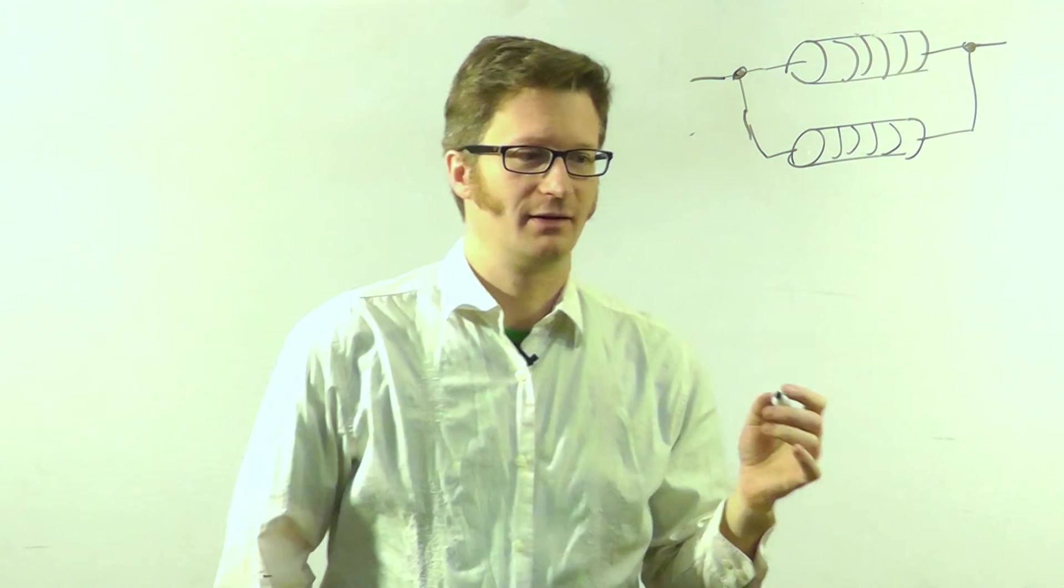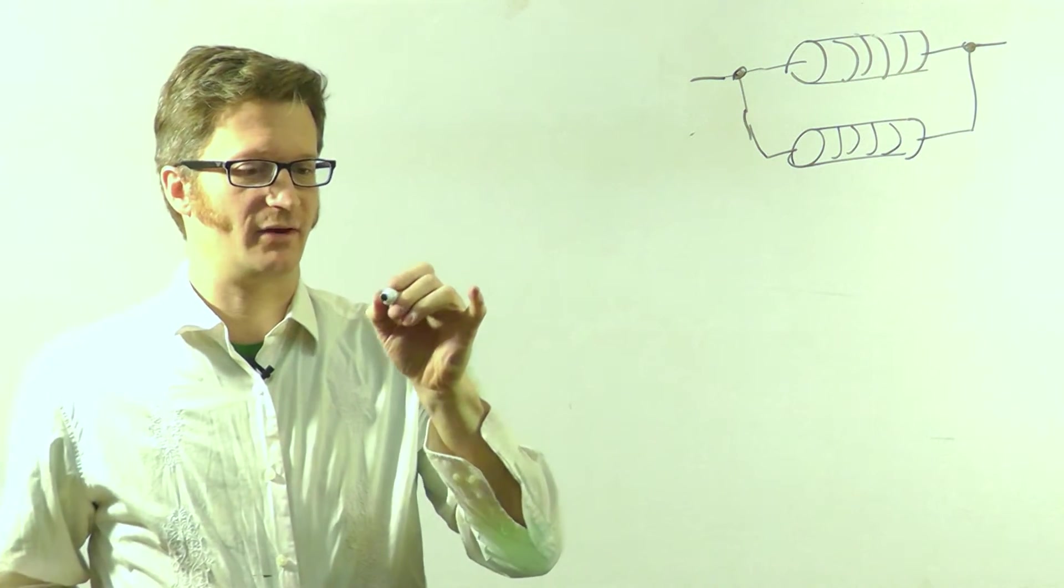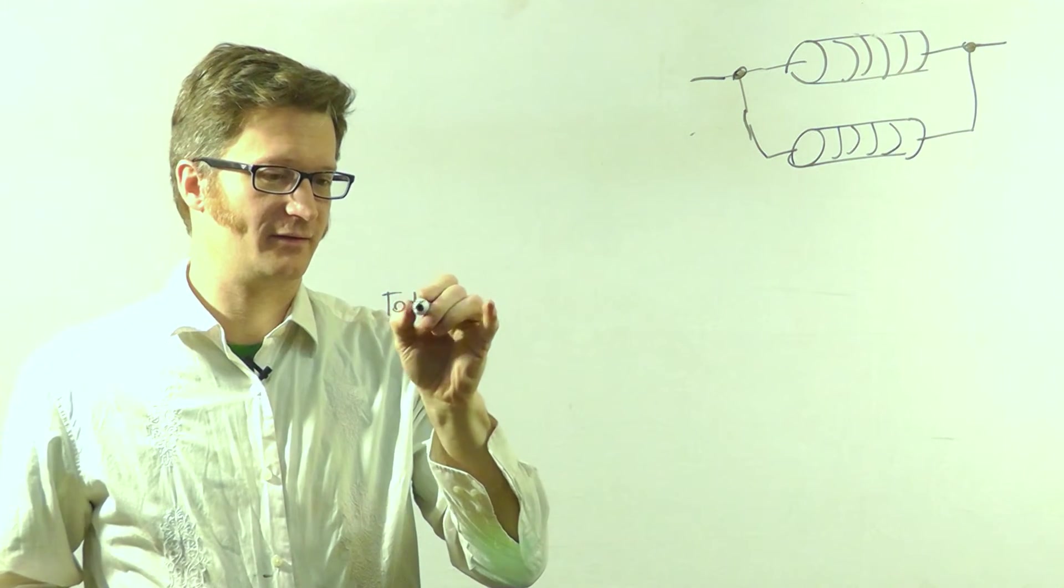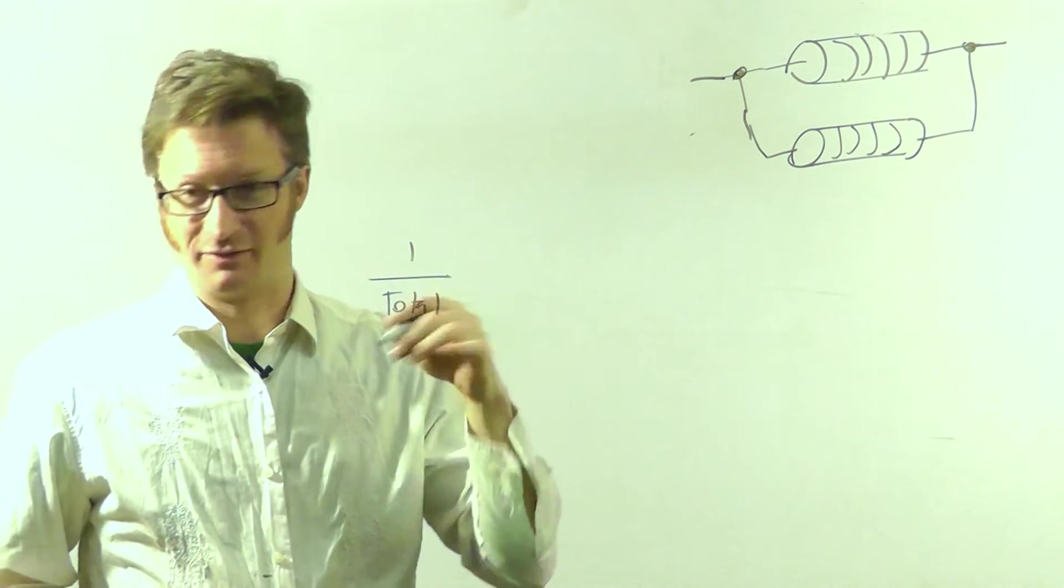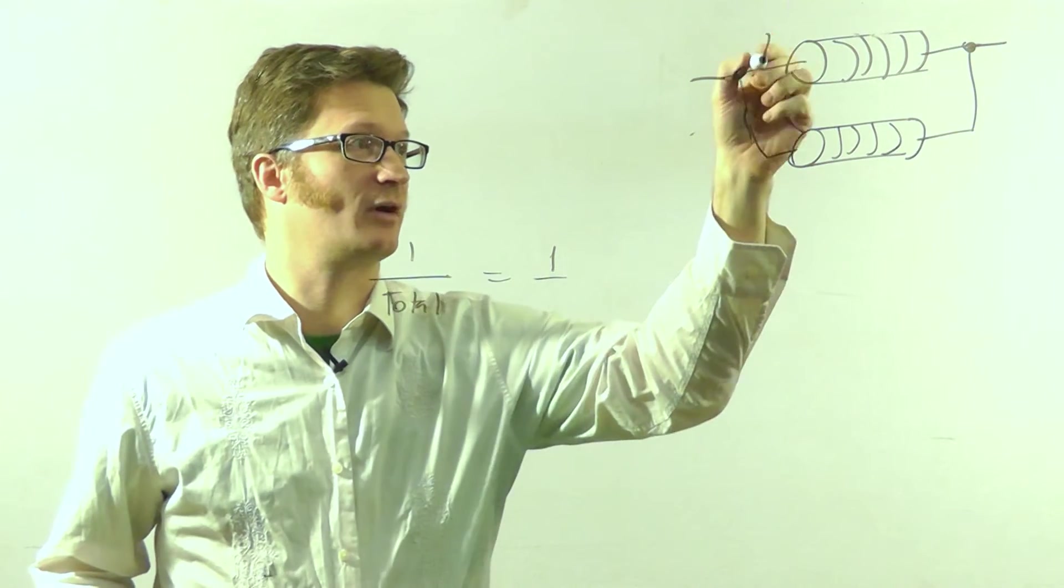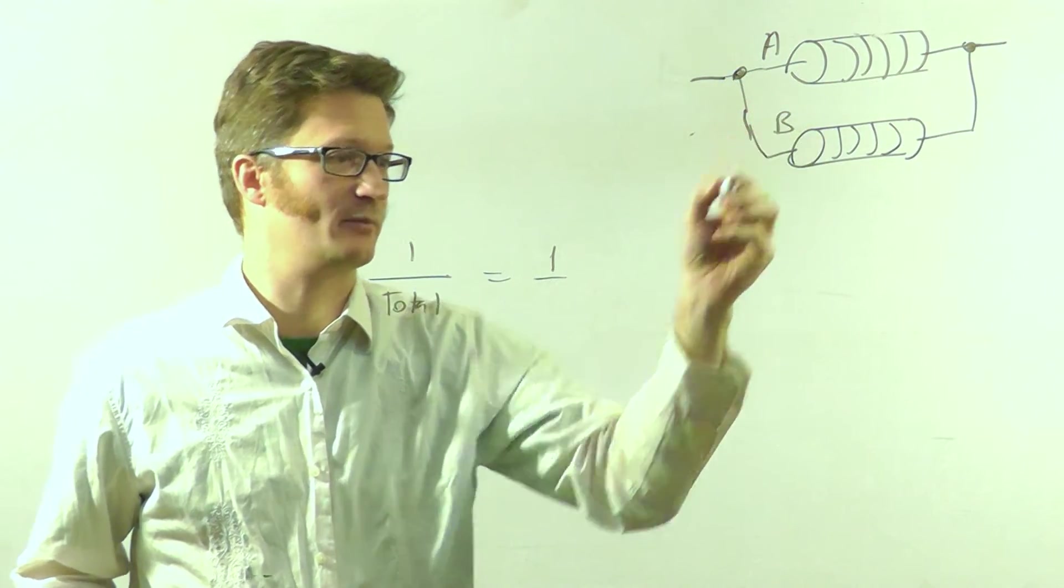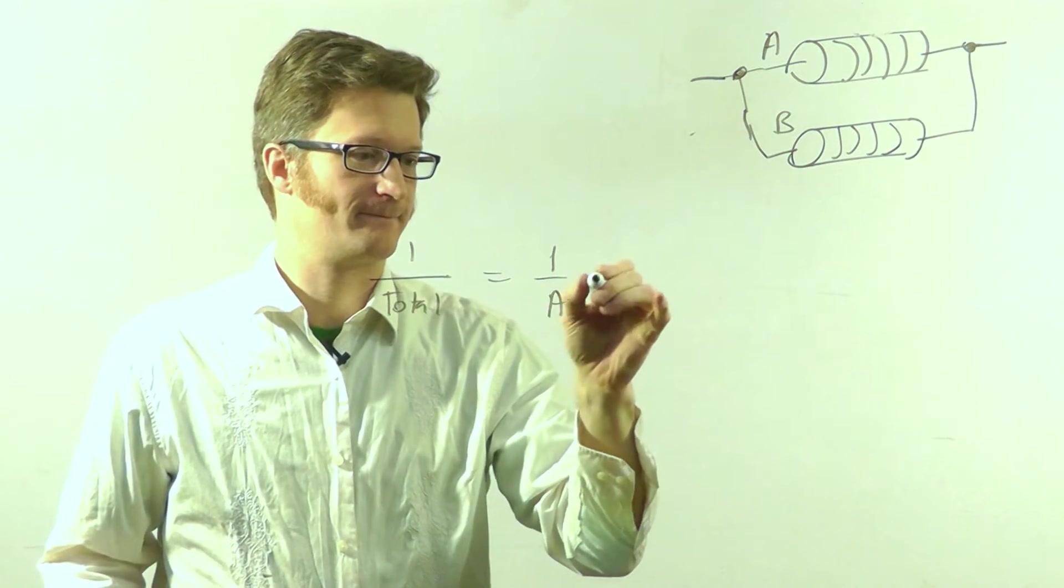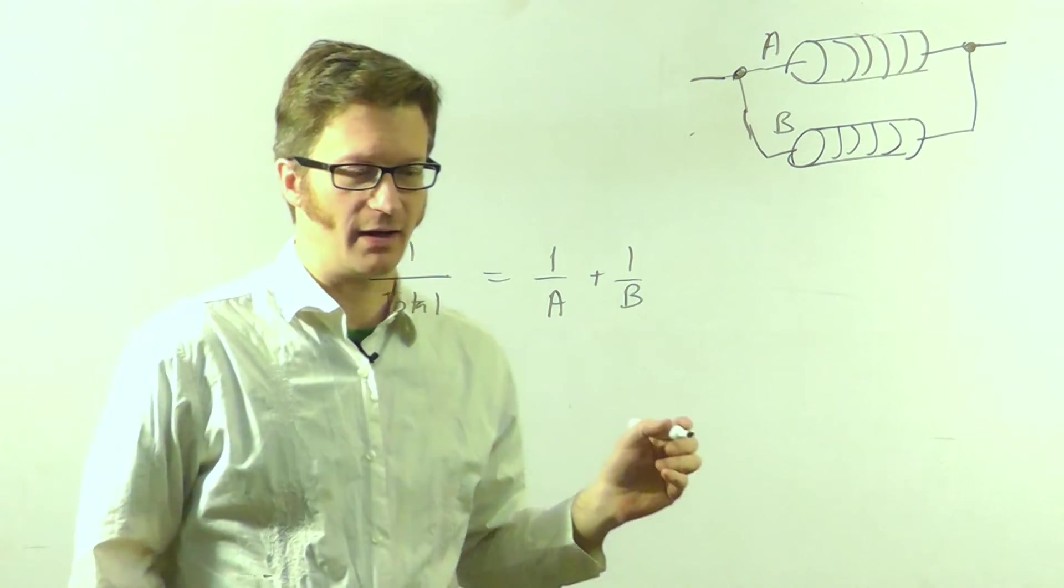If I have them connected like that, it's a slightly more complicated formula, but it's not so bad. 1 over the total resistance equals 1 over resistor A plus 1 over resistor B.